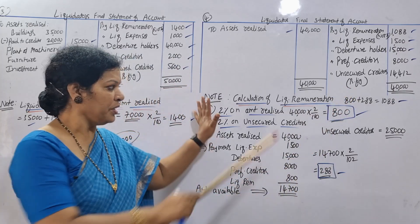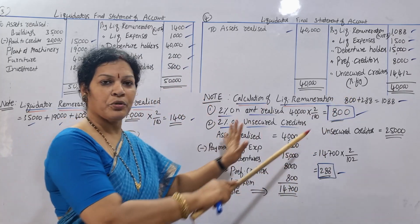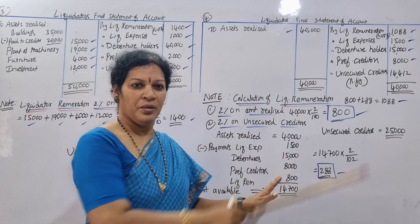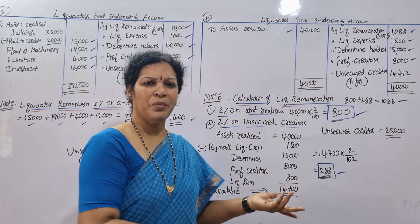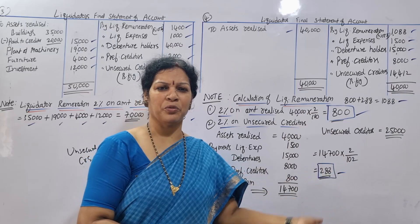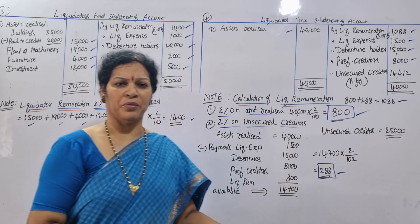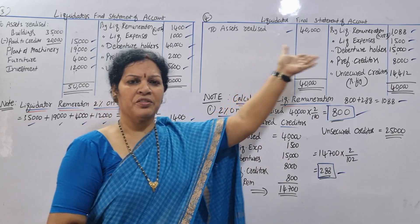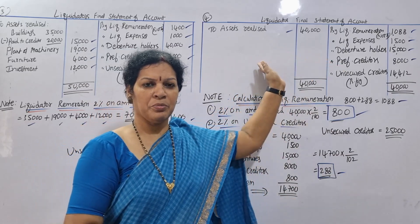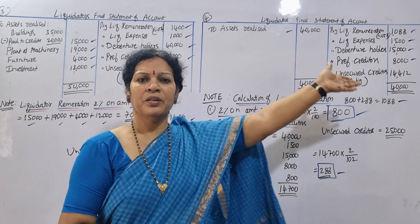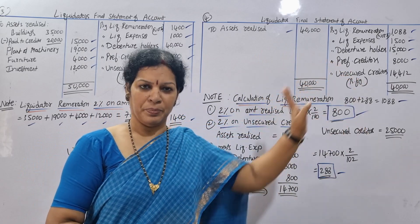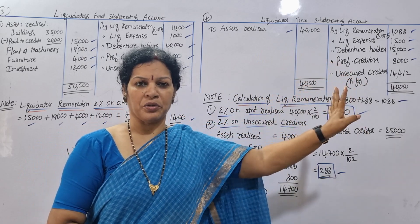Simple — well, not that simple. Let's recap the calculation. The problem follows the same format: debit side as receipts, credit side as payments. We make the payment side accordingly.